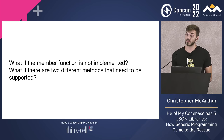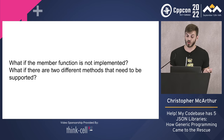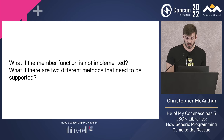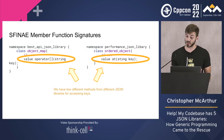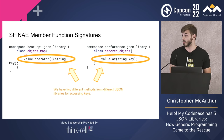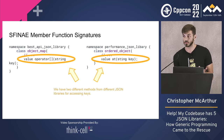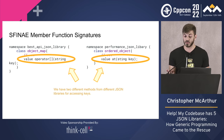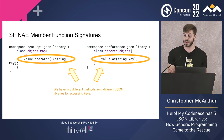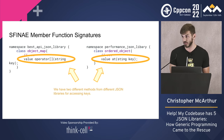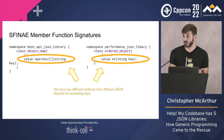What if the member function is not implemented? What if there are actually two different methods we need to support? We have two different JSON libraries: one 'best API' JSON library uses the subscript operator to access key-value pairs inside its object type. On the other side, a 'performance' JSON library uses the at method. Both are trying to do the same thing — access a specific key and return a generic value — but with two different API signatures.